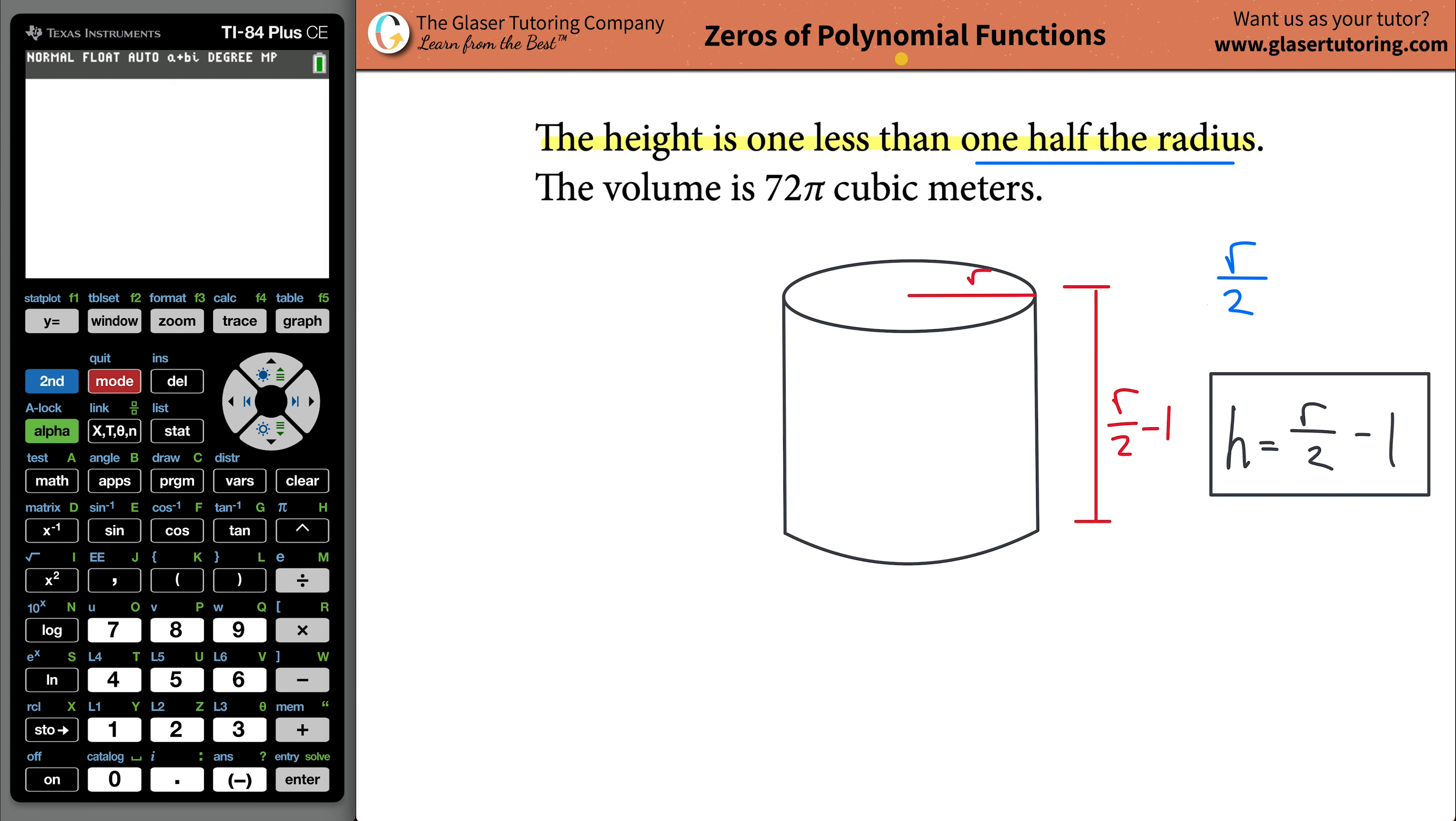So the last piece of information is it tells us that the volume is going to be 72π cubic meters. So somehow the volume has to be related to the height and the radius. Sorry, we're not dealing with a two-dimensional box.